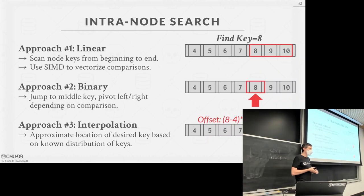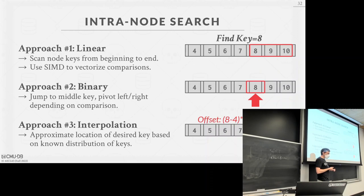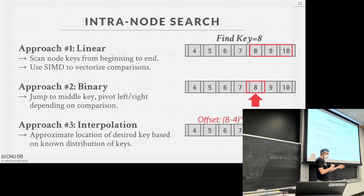A student asks: do we store the B+ tree index on disk? Yes — this whole course is about storing on disk. You bring pages into memory to do anything with them (classic von Neumann architecture), but the index is written back to disk via the buffer pool and disk manager. In this class, yes, the index is stored on disk.